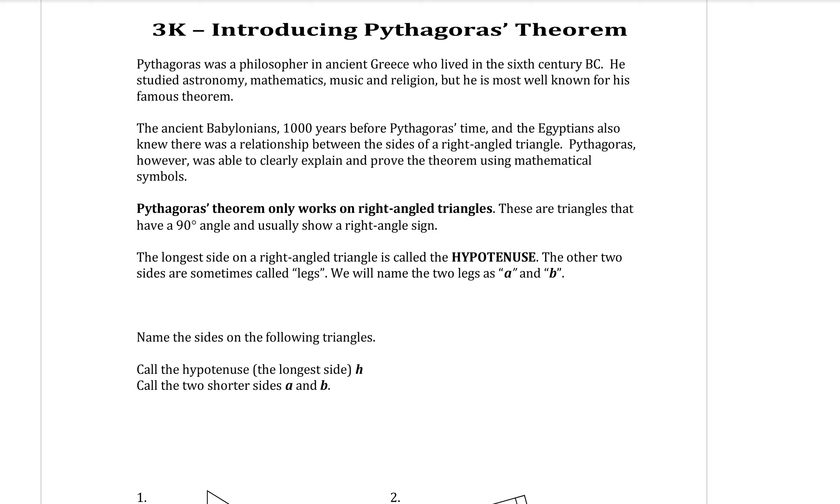Pythagoras' theorem only works on right-angled triangles. These are triangles that have a 90 degree angle and usually show a right-angled sign. The longest side on a right-angled triangle is called the hypotenuse. The other two sides are sometimes called the legs, and we're going to name these two sides a and b.